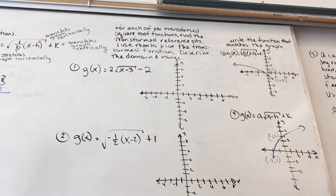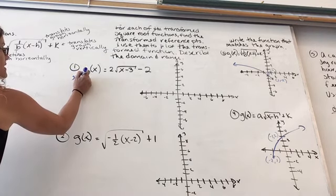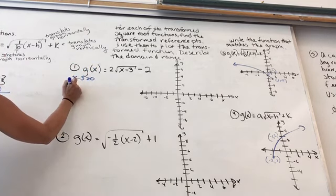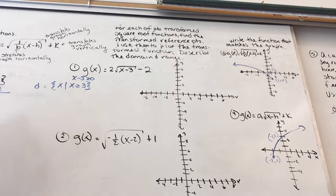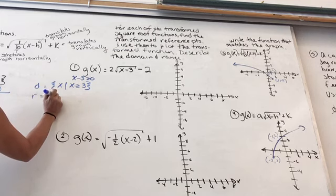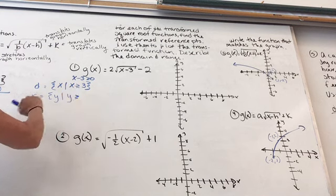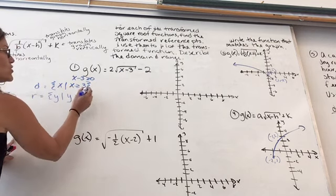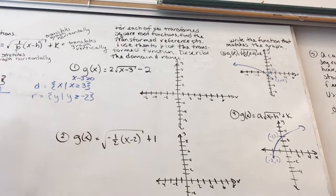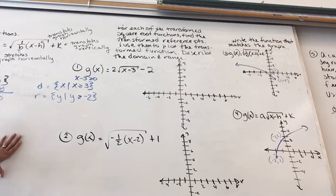The domain is really what's going to happen with the radical. On a square root, we can't take the square root of a negative number. To find our domain, we set X minus 3 greater than or equal to 0, which means X has to be greater than or equal to 3. For the range, we plug that domain value into the equation: 3 minus 3 is 0, the square root of 0 is 0, times 2 is 0, minus 2 gives us negative 2. So the range is Y greater than or equal to negative 2.